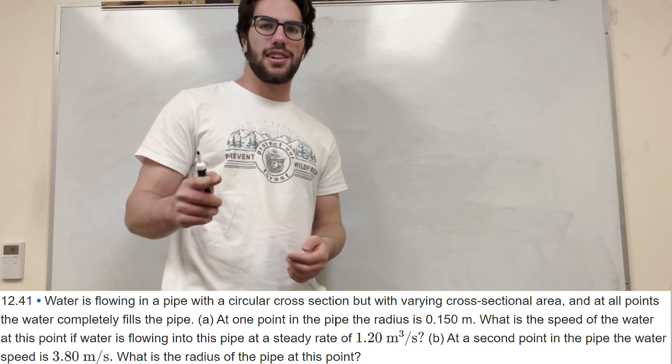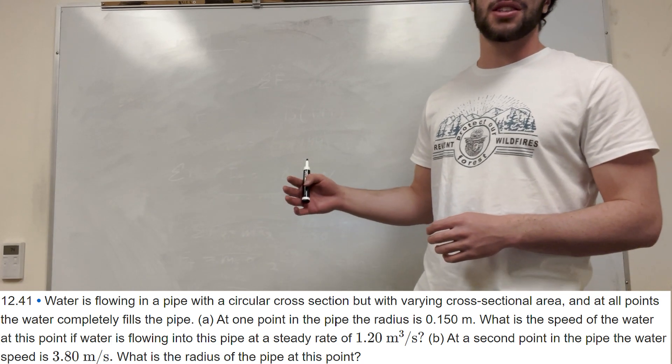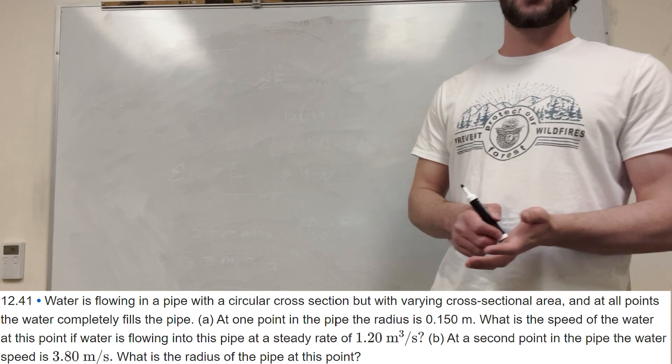What's up Cal gang? Alright, so we're back here with another fluid dynamics question. It says water is flowing in a pipe with a circular cross-section but with varying cross-sectional areas.